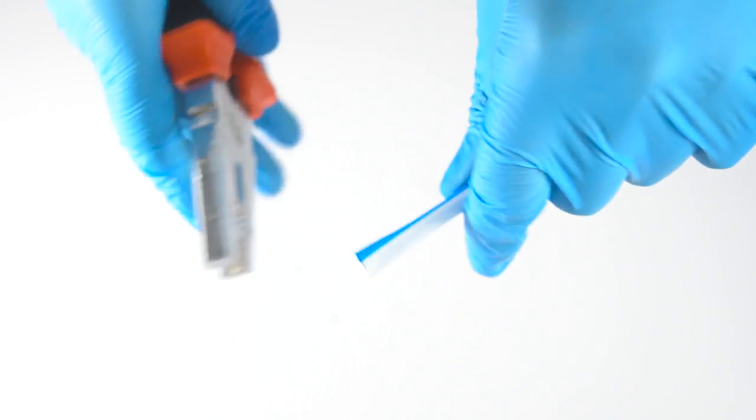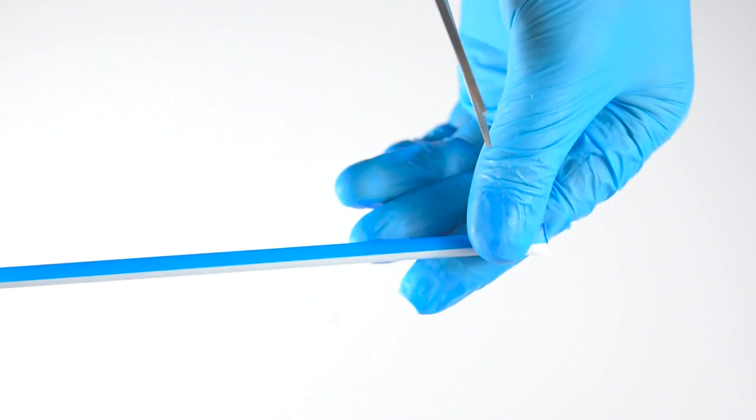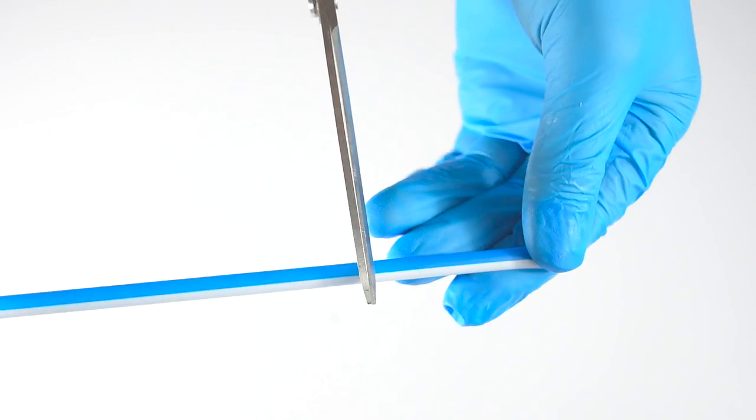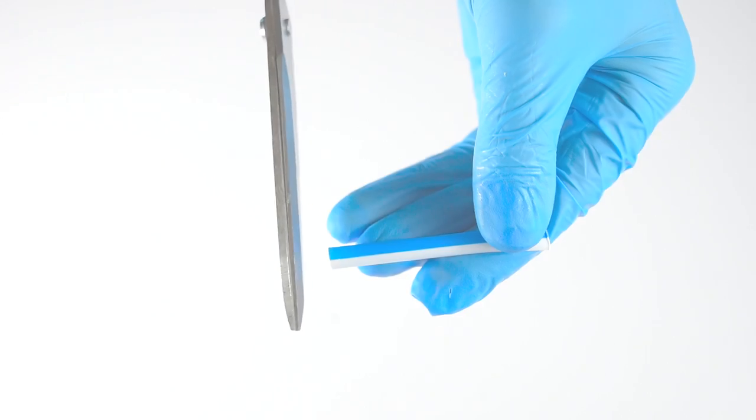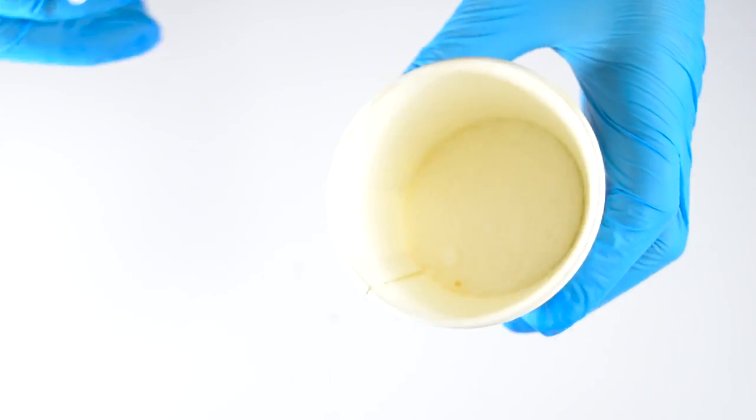Then, using a lighter, we make the first plug. Next, we measure the needed length depending on what and how much of it we want to store. And cut! We will try to seal some sugar in our capsule.